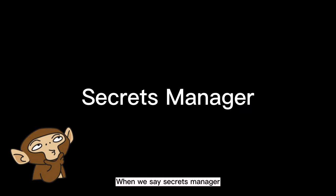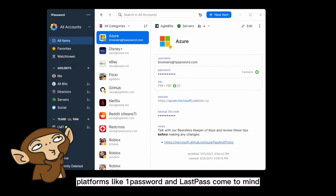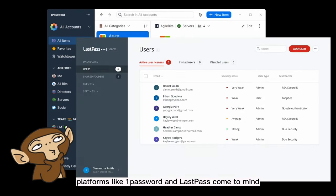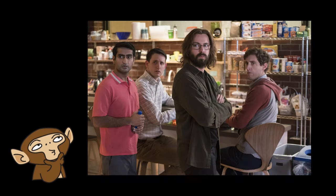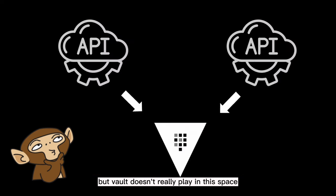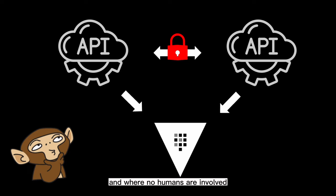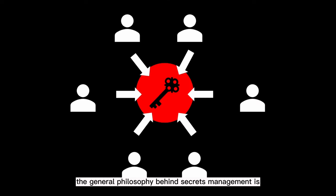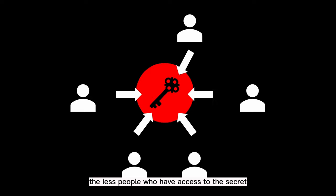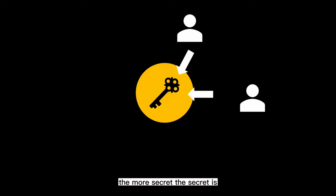When we say secrets manager, platforms like 1Password and LastPass come to mind. These platforms allow people to access secrets. But Vault doesn't really play in this space. Vault is primarily used to secure application workloads such as authentication between APIs where no humans are involved. The general philosophy behind secrets management is: the less people who have access to the secret, the more secret the secret is.